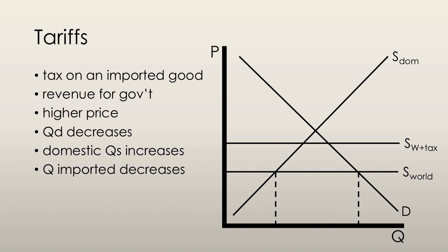This higher price reduces the quantity demanded of the good. The new quantity demanded is at the point where the new world supply curve intersects the demand curve.